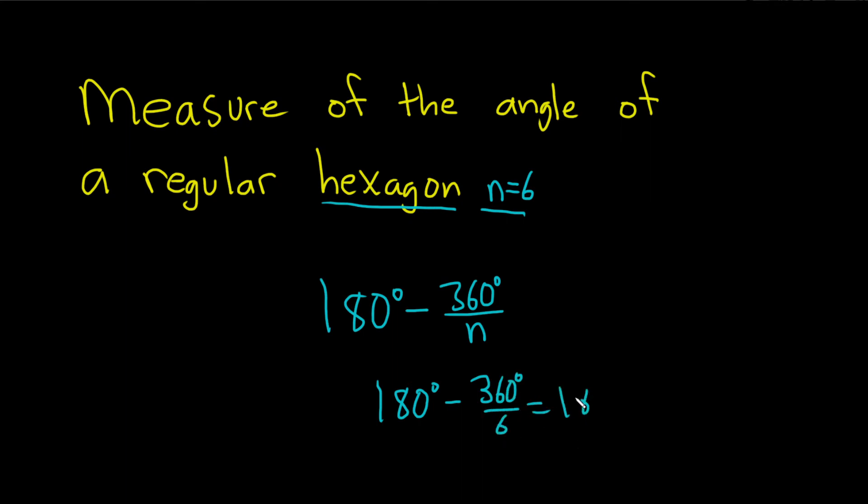So that's equal to 180 minus... 360 divided by six is 60. So this is 180 minus 60, which is 120 degrees.